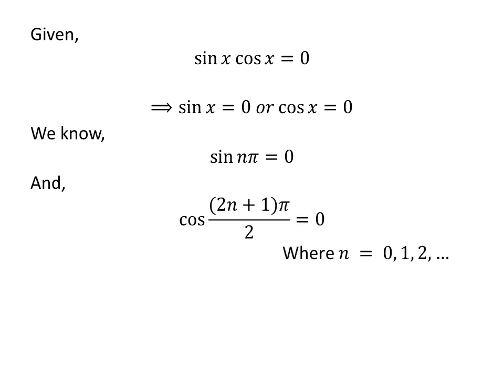And we also know cosine of pi over two is zero, cosine of three pi over two is zero, cosine of five pi over two is zero, and so on. Thus, we can say that cosine of an odd natural number times pi over two is equal to zero.